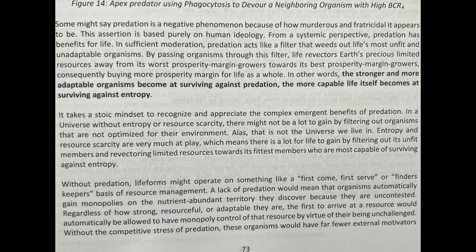By passing organisms through this filter, life re-vectors Earth's precious limited resources away from its worst prosperity margin growers towards its best prosperity margin growers, consequently buying more prosperity margin for life as a whole. In other words, the stronger and more adaptable organisms become at surviving against predation, the more capable life itself becomes at surviving against entropy. It takes a stoic mindset to recognize and appreciate the complex emergent benefits of predation. In a universe without entropy or resource scarcity, there might not be a lot to gain by filtering out organisms that are not optimized for their environment. Alas, that is not the universe we live in. Entropy and resource scarcity are very much at play, which means there is a lot for life to gain by filtering out its unfit members and re-vectoring limited resources towards its fittest members who are most capable of surviving against entropy.